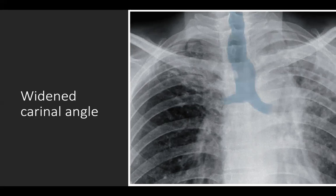The carinal angle is the angle between the left and right main stem bronchus. Normally, the angle is between 40 and 100 degrees. An increase in the carinal angle is an indirect sign of pathology in the heart, mediastinum, or lungs. If there is increased carinal angle, something is pushing from beneath the carina or pulling from above the right or left main stem bronchus.